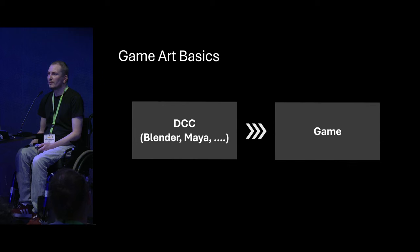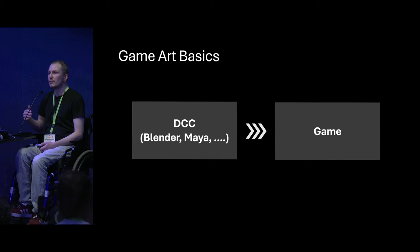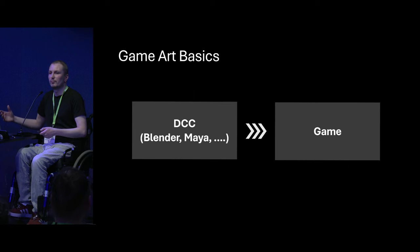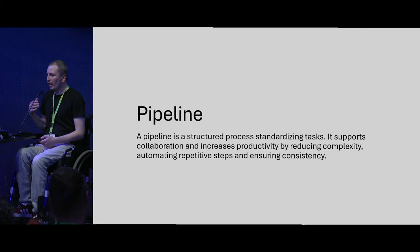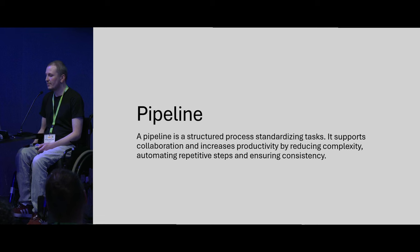The main difference to most of what we've seen today is that nothing we do has its end use inside of Blender. We always go through a chain of conversions, a chain of tools, and into a game engine. What we create is intended to be used somewhere else. I would define a pipeline as a structured process standardizing tasks — it supports collaboration and increases productivity by reducing complexity, automating repetitive steps, and ensuring consistency.